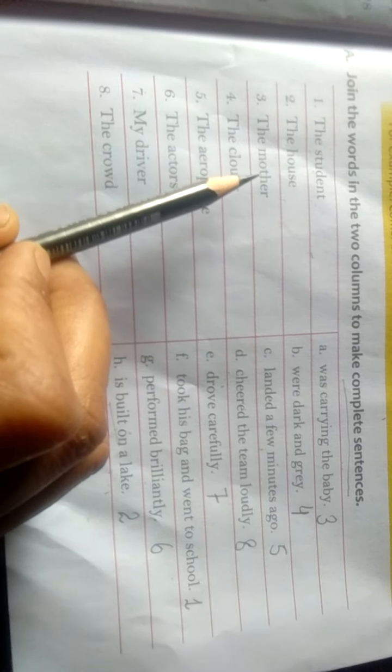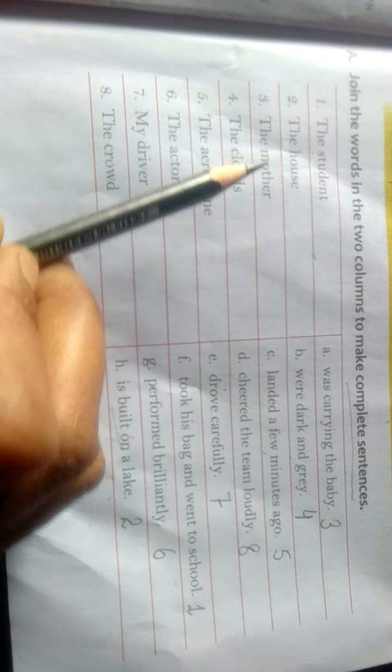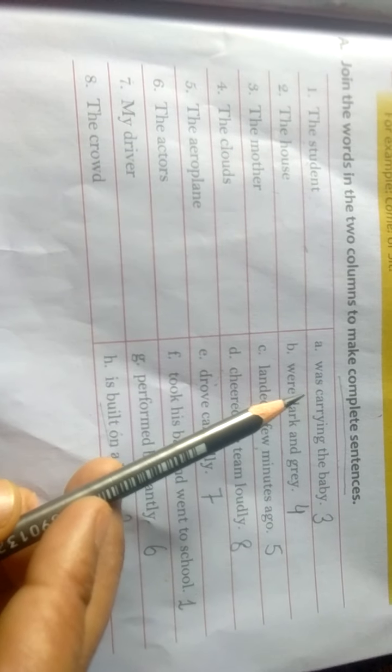Second, the house. The house is built on a lake. We have to match the second one with this. Third, the mother. The mother was carrying the baby. Why we are matching this with this? Because this makes a complete sentence.